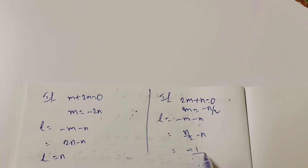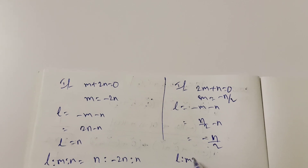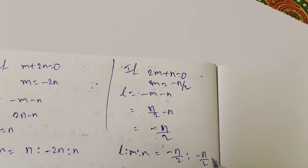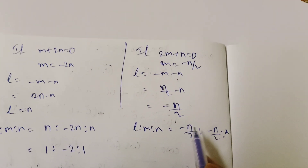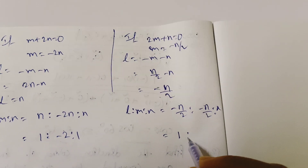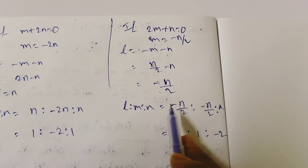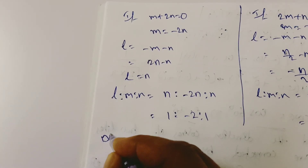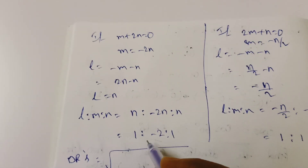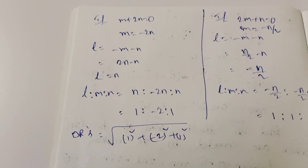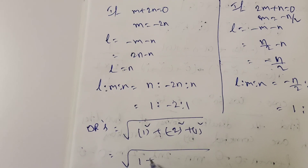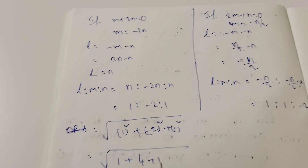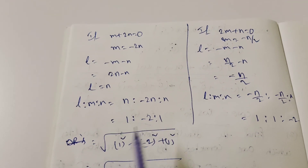The direction ratios become L:M:N as minus n/2 : minus n : n. Multiplying through by 2 and cancelling n, we get direction ratios 1, 1, minus 2. To find the direction cosines, divide by root(1 squared plus 1 squared plus minus 2 squared) equal to root 6.